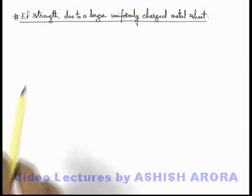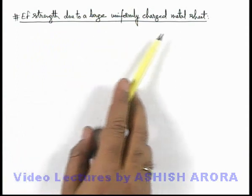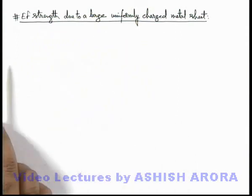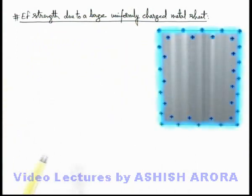Let us discuss the electric field strength due to a large uniformly charged metal sheet. Here we can see this picture shows a very large metal sheet which is uniformly charged on its surface with charge density sigma.